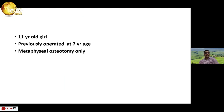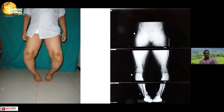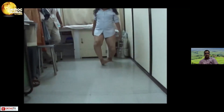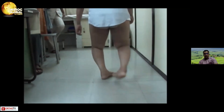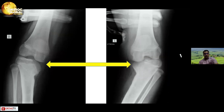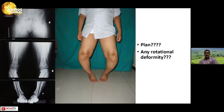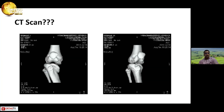This is an 11-year-old girl, previously operated on at 7 years of age with only a metaphyseal osteotomy. We don't know what stage she was at that time. This is her picture and her gait. There is some internal rotation, especially on the right side. X-ray stress views show epiphyseal depression and metaphyseal varus. We measured the CORA — it was an oblique plane deformity on the right. A CT scan was taken not for rotational deformity, but to assess the intra-articular deformity.